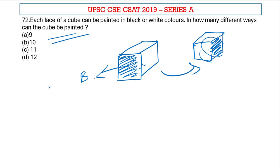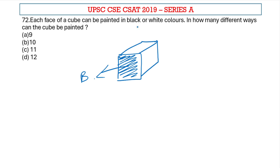So do not get confused with combination formulas. Now let's move on to the sum. Basically they are asking in how many ways I can paint with black or white colors. There is one possibility where I paint only one face as black and all the other faces as white. So this is one possibility.